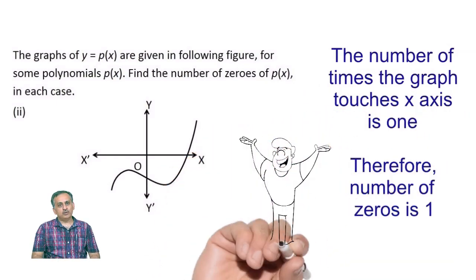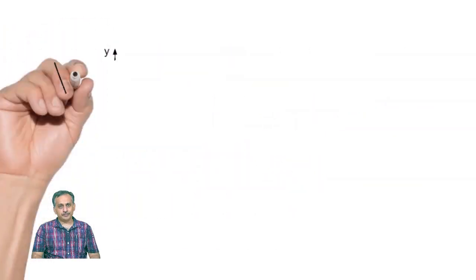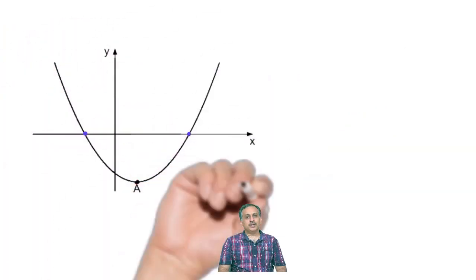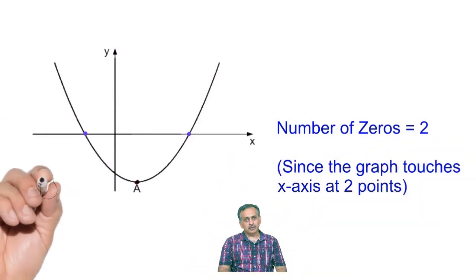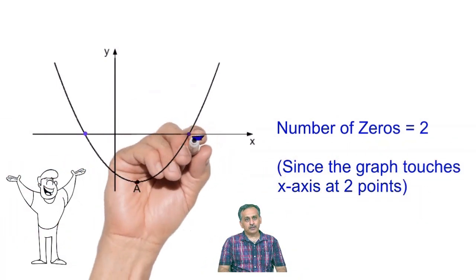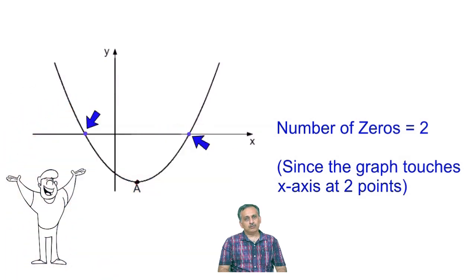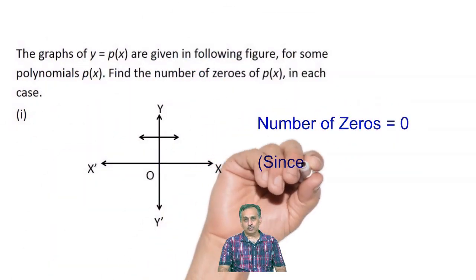If y is equal to p of x, then the graph of the polynomial crosses the x-axis at certain points — each crossing is a zero. If the graph cuts the x-axis at one point, the polynomial has one zero; at two points, it has two zeros. And if the graph does not cut the x-axis at any point, it means that polynomial has no zero.